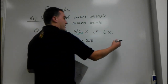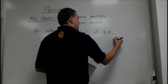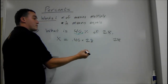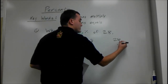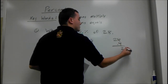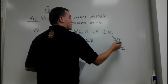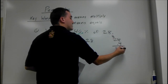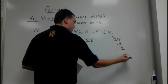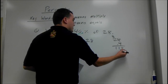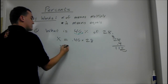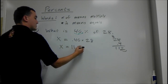Now, do this without a calculator. We have 28 times .40, which can be written as .4. Just multiply it out. 4 times 8 is 32. 4 times 2 is 8, plus 3 is 11. And we're moving the decimal over one place. So our answer is 11.2. So x is 11.2.